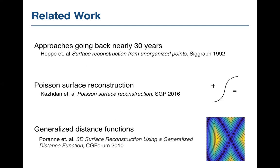The first is Poisson surface reconstruction, where a surface is represented as the level set of some function built on space. We take R3, build some function on it, and then the surface is a level set of this function. We need to determine points that are inside and outside the surface, and the level set is the zero set of this function. We can also consider super or sub-level sets of generalized distance functions, radial basis functions, or other types of functions.